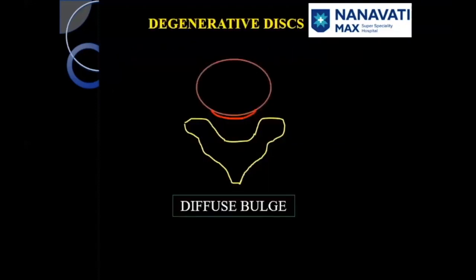Basic nomenclature of degenerative disc disorders is what we will see in the next three or four slides. You must understand a little bit of applied anatomy with degenerative disc disorders. As the inner annular fibres get torn and the nucleus gets degenerated, the annulus starts bulging out. When it covers more than 25% of the whole disc circumference without being focal, it is called a diffuse posterior or anterior bulge.